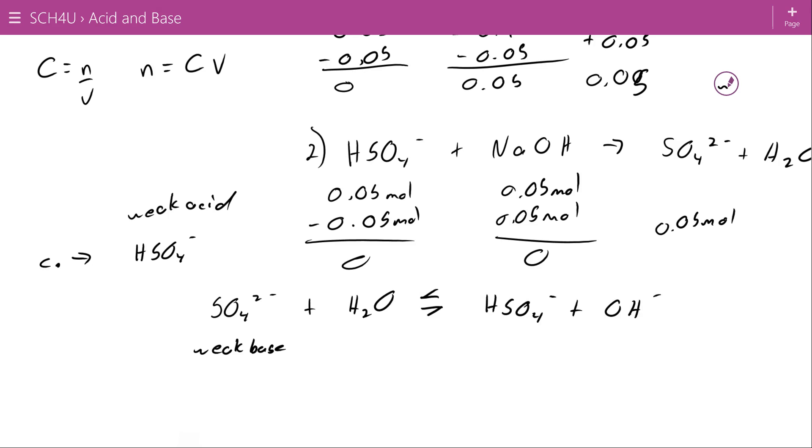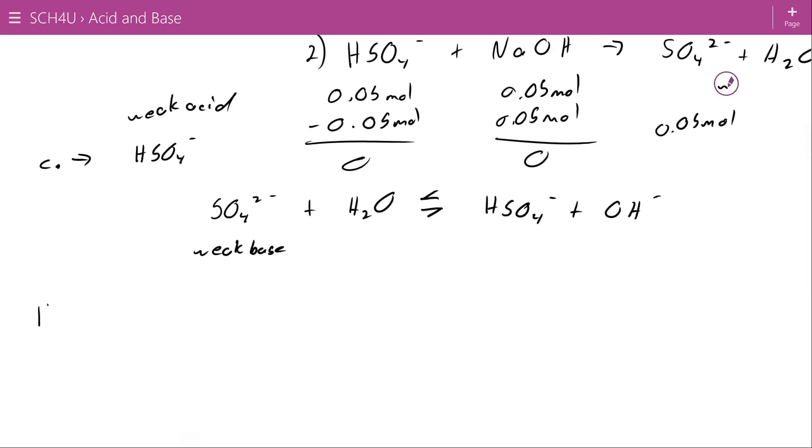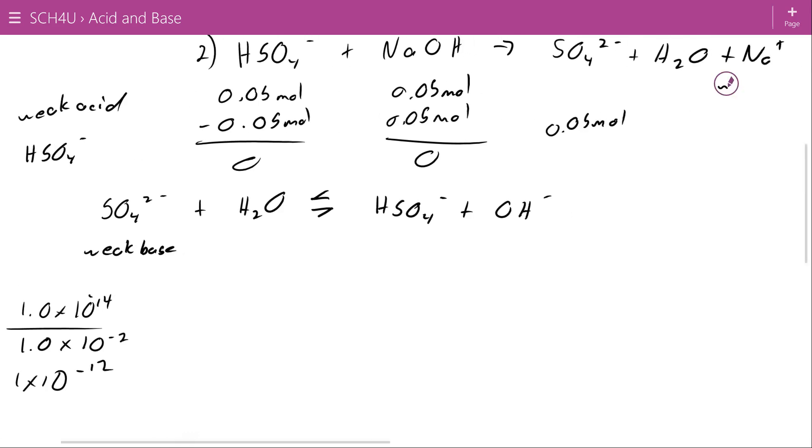So here we're going to have a hydroxide population. We're going to swing that pH straight through 7 all the way up to something higher. This is a conjugate process so we don't have the Kb for this directly, so we'll have to use the Ka and the Kw for water. So Kw is 1.0 times 10 to the negative 14. Ka is 1.0 times 10 to the negative 2, which means my Kb for the conjugate process is 1 times 10 to the negative 12.